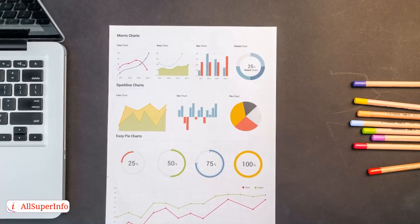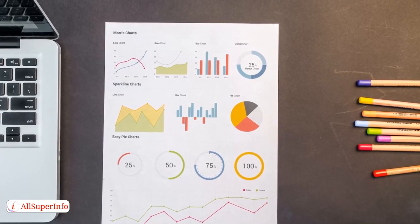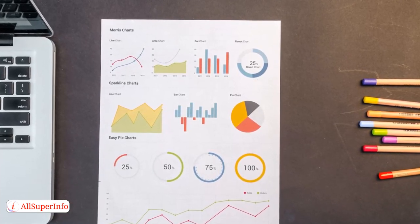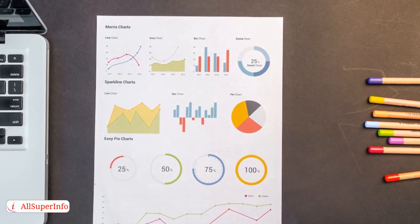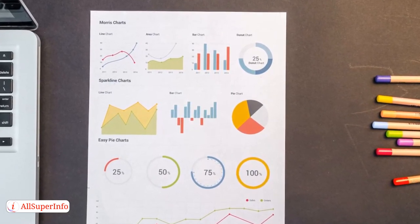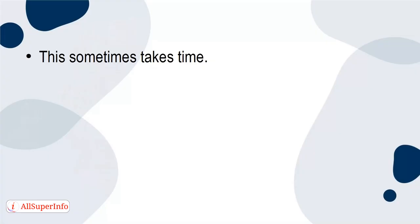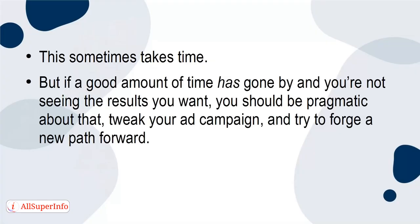Another tip to always keep in mind is that you should monitor your results, but also always be realistic. You may have created a killer ad and distributed it across all your social media platforms, but don't expect overnight success. This sometimes takes time. But if a good amount of time has gone by and you're not seeing the results you want, you should be pragmatic about that. Tweak your ad campaign and try to forge a new path forward.